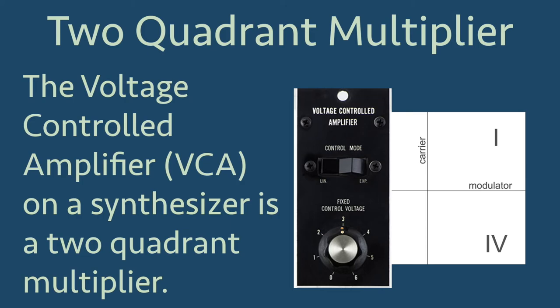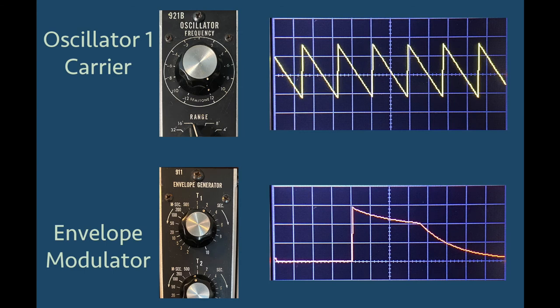To demonstrate the multiplication that happens with the VCA, I will use a sawtooth waveform as our carrier, which we can simply call the audio input. And for the modulator, I will use the envelope function.